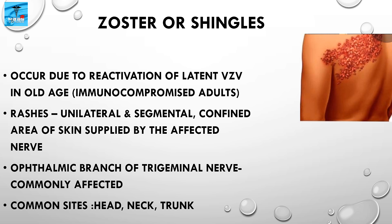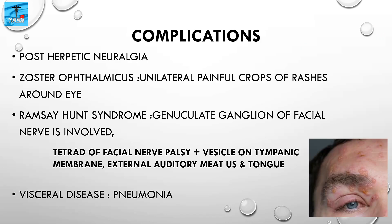Zoster or shingles occurs due to reactivation of the latent Varicella Zoster Virus, commonly in immunocompromised adults. The peculiarities of the rashes are that they are unilateral and segmental, confined to the area of skin supplied by the affected nerve — restricted to a specific dermatome. The trigeminal nerve is commonly affected, and the commonly affected sites are the head, neck, and trunk. In the figure, we can see zoster rashes restricted to a specific dermatome.